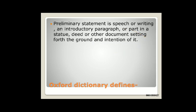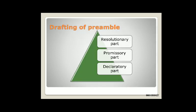When we discuss the preamble to the Indian Constitution, we find three parts. I can classify the preamble into three parts: the first one is the resolutionary part, the second is the promissory part, and the third is the declaratory part. The preamble starts: 'We the people of India having solemnly resolved to constitute India into a sovereign socialist secular and democratic republic.' This first phrase is the resolutionary part — we the people of India are taking a resolution to constitute India into a sovereign socialist secular and democratic republic.